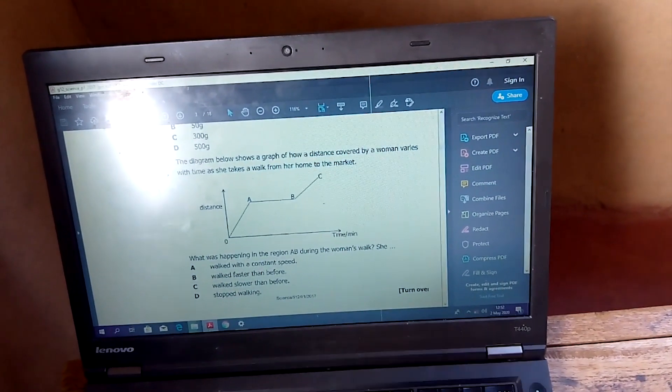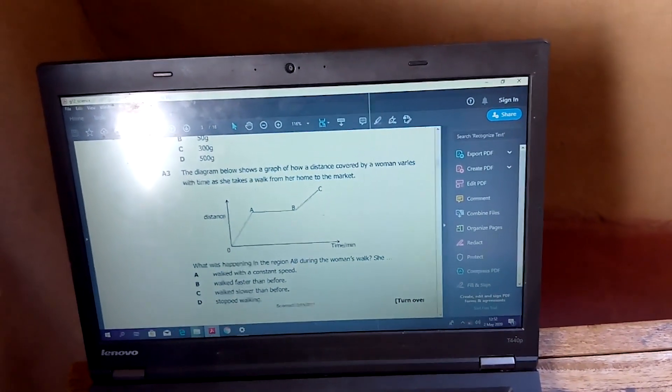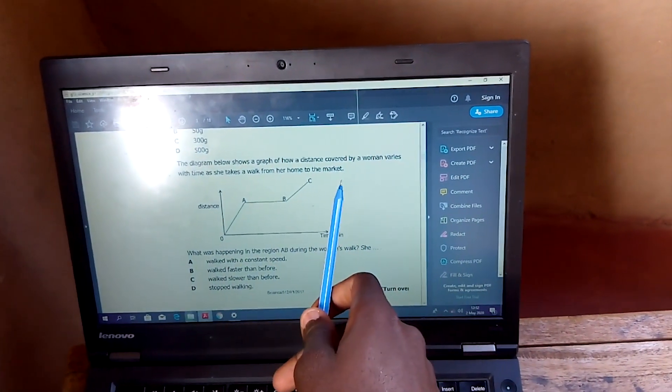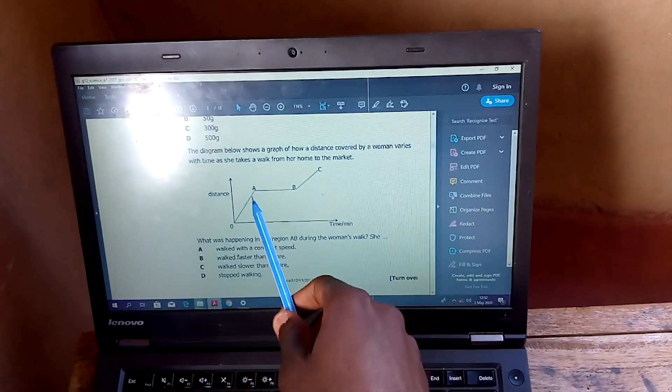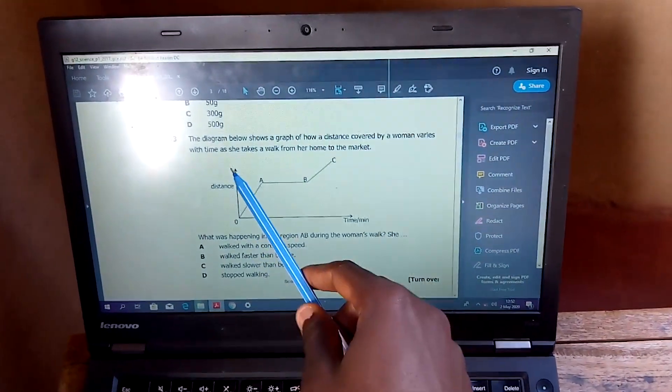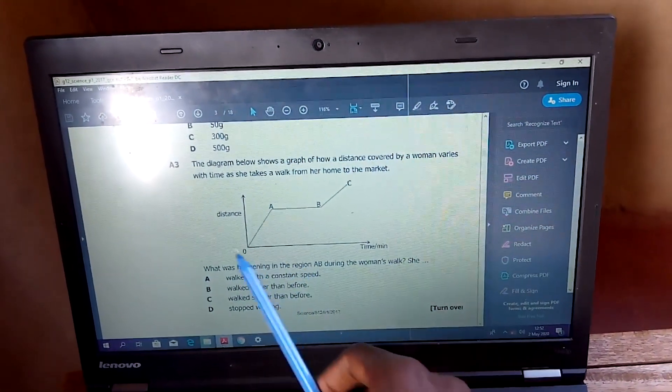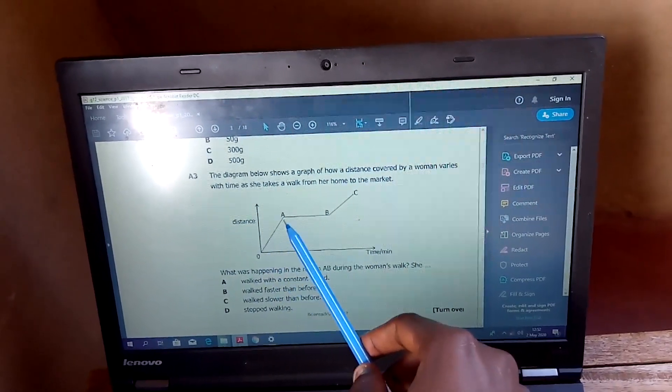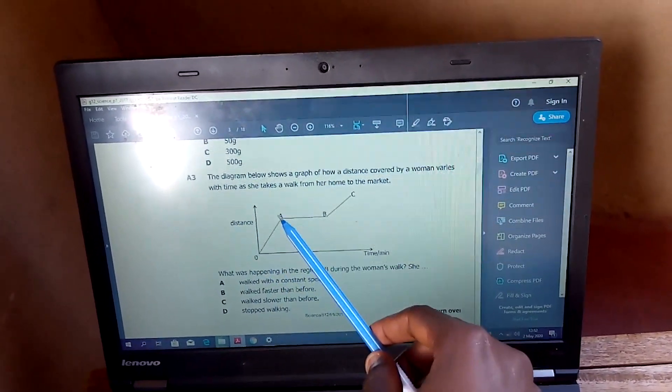The diagram below shows how a distance covered by a woman varies with time when she takes a walk from her home to the market. What was happening in the region A to B during the woman's walk? If you can see, this is a distance-time graph. So this tells us that from O to A, the distance was increasing. And if the distance is increasing, then that person is moving.